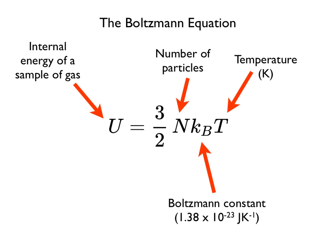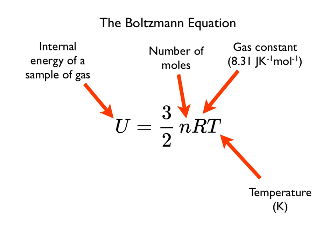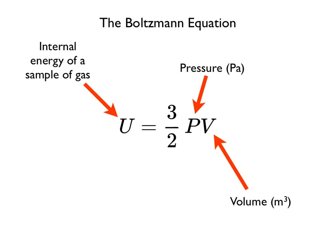Since the total energy of the sample of gas is the sum of all the kinetic energies of the individual particles, if we multiply the previous equation by the number of particles, big N, we can calculate the internal energy, U, of the sample of gas. If we replace the Boltzmann constant k sub b with the gas constant R, then we can use the number of moles of the gas rather than the number of particles. This is generally more useful. Since PV equals nRT, we can substitute PV into the previous equation and see that the internal energy of a gas sample is simply 3/2 PV. Pretty elegant, no?